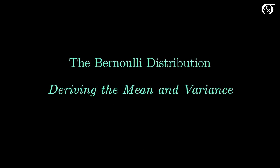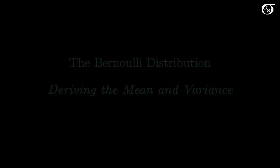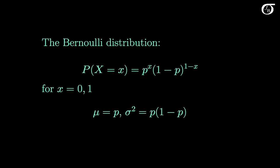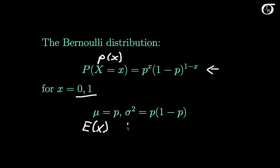Let's derive the mean and variance of the Bernoulli distribution. Here's the probability mass function for the Bernoulli distribution, and sometimes I take a bit of a shortcut and write this as p(x). A Bernoulli random variable can take on the values 0 or 1. In this video I'm going to show that the mean, or expectation, of a Bernoulli random variable x is equal to p, and sigma squared, or the variance of a Bernoulli random variable x, is equal to p(1-p).